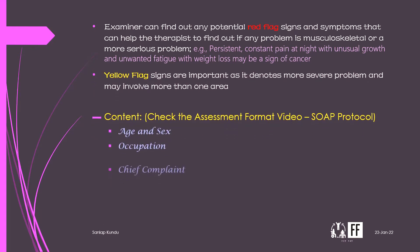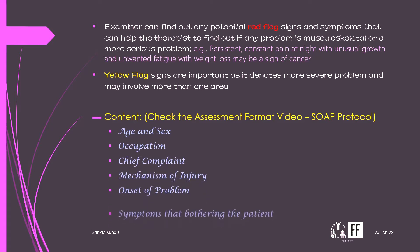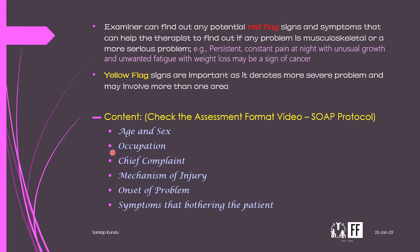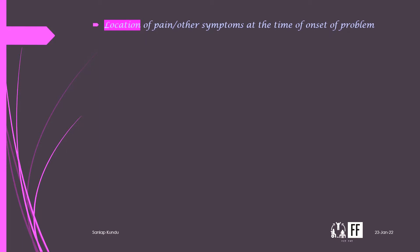Yellow flag signs are important as they denote a more severe problem and may involve more than one area. The content of a history includes: age, sex, occupation, chief complaint, mechanism of injury, onset of problem, symptoms bothering the patient, and location of the pain or other symptoms at the time of onset.